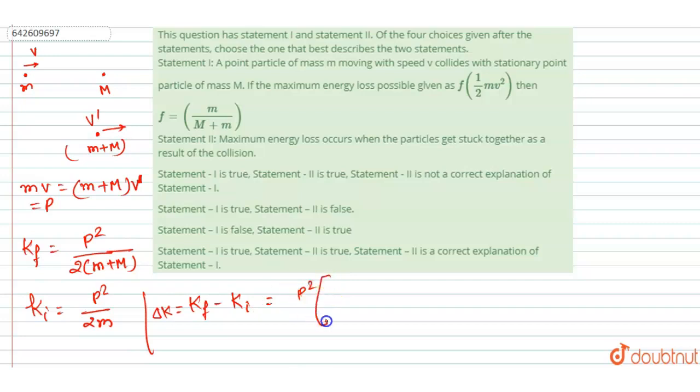It will be p squared by 2, and in the bracket I will write this minus this. So now you can calculate: this will be p squared by 2 in bracket, m into (m + M).